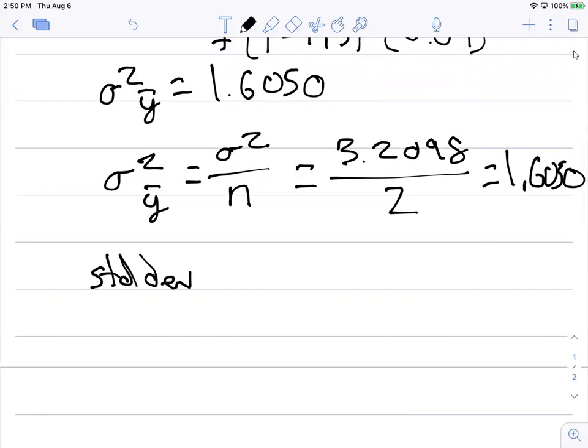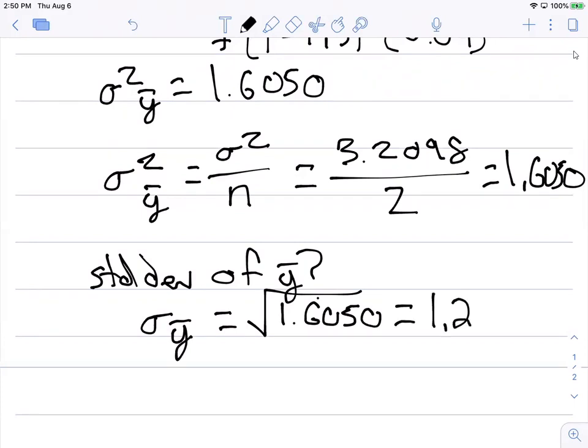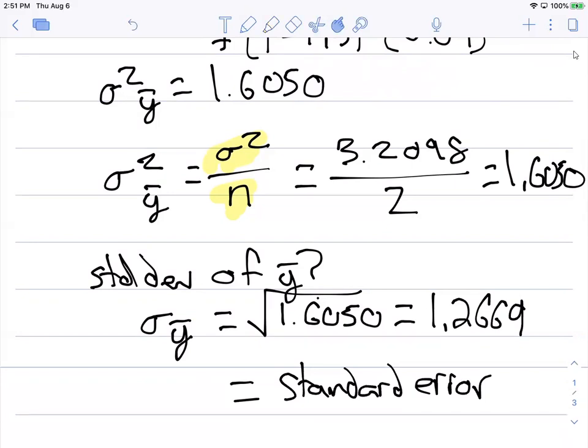So now what's the standard deviation of y-bar? Well, we can denote that sigma sub y-bar, or the square root of 1.6050, and that would equal 1.2669, and that would equal what we call the standard error. And so this is a key calculation now. Because we've got some samples in terms of n, and we already know what the variance is, we calculate the standard error by taking the variance divided by n, or sigma squared divided by n to find the standard error. Notice that our standard error is lower than our standard deviation that we calculated earlier.